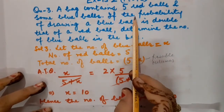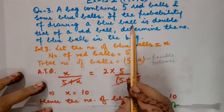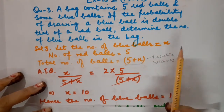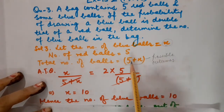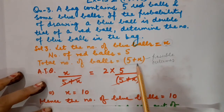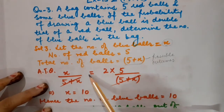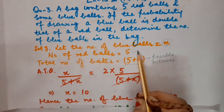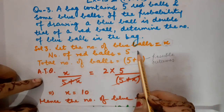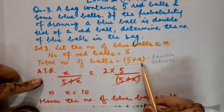Now, according to the question, we will have to calculate the probability of drawing a blue bowl. The number of blue bowls is x, so x will be the favorable outcome. Using the formula — number of favorable outcomes upon total number of outcomes — the probability of drawing a blue bowl is x upon 5 plus x. This probability is double, that is twice, the probability of the red bowl. There are 5 red bowls, so the probability of red is 5 upon 5 plus x.